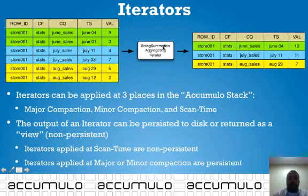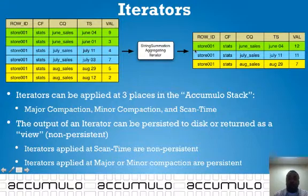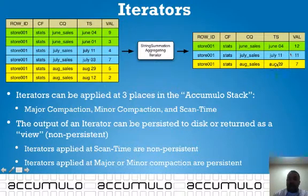However, if you apply your iterator at major or minor compaction, then during that compaction process, it will create an aggregated view of your data and the data will persist.